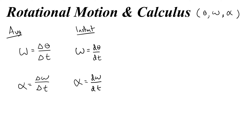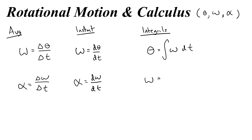Those are the common derivatives we use, but it's also important to remember that we can go backwards and anti-derive. When we're anti-deriving we're finding the integrals. The integrals are just like the integrals for regular linear motion. If I wanted to find theta, I would integrate the angular velocity with respect to time. And if I wanted to find the angular velocity, I would integrate the angular acceleration with respect to time, just like you would do with linear motion.